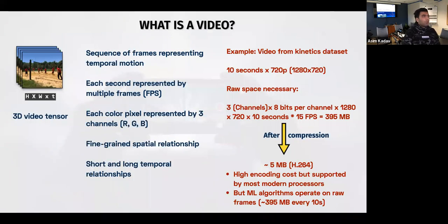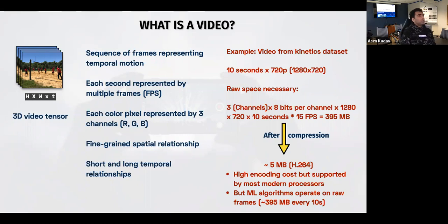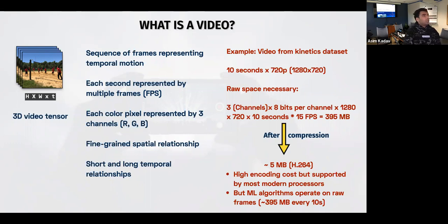Now, what is a video? A video basically consists of a sequence of frames that represent temporal motion. Each frame can represent a fraction of a second — this is what you mean by frames per second. If you have 30 frames per second, one second is represented across 30 contiguous frames. Just like in images, you have three channels for color videos. As a result, a video becomes a three-dimensional tensor: height, width, and number of frames. If you use it in your favorite framework, you also have channels, making it a 4D tensor input. In video, you have fine-grained spatial relationships as well as short and long temporal relationships.